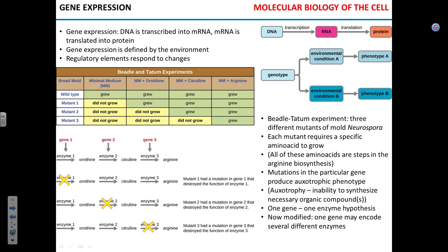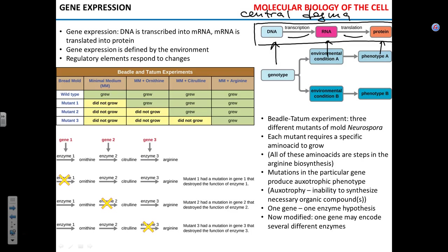Gene expression. This scheme is called the central dogma of molecular biology. DNA is transcribed to RNA; RNA is translated into proteins. It's sometimes hard to avoid confusion between transcription and translation. My way to remember: DNA and RNA — what are their elementary building blocks? Nucleotides. So they are written in the same language.